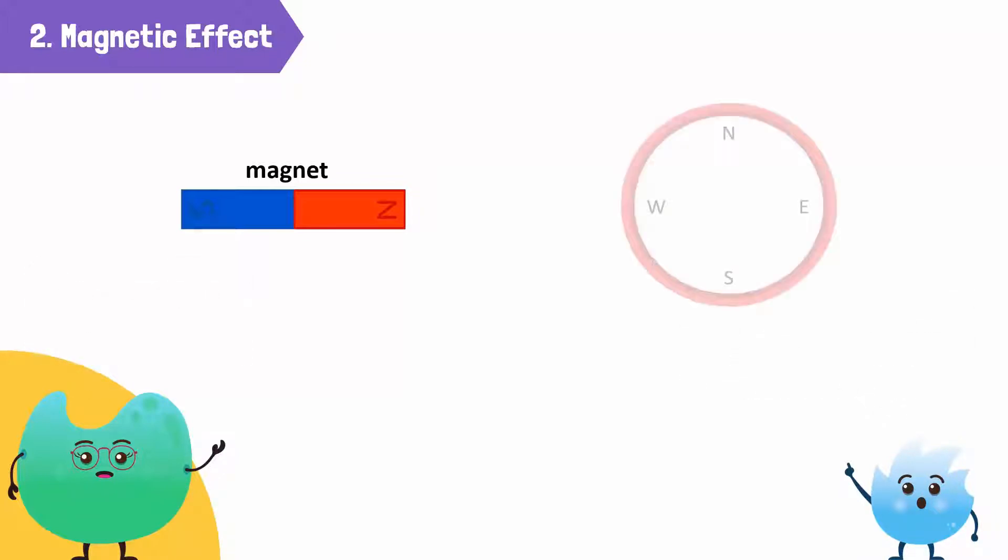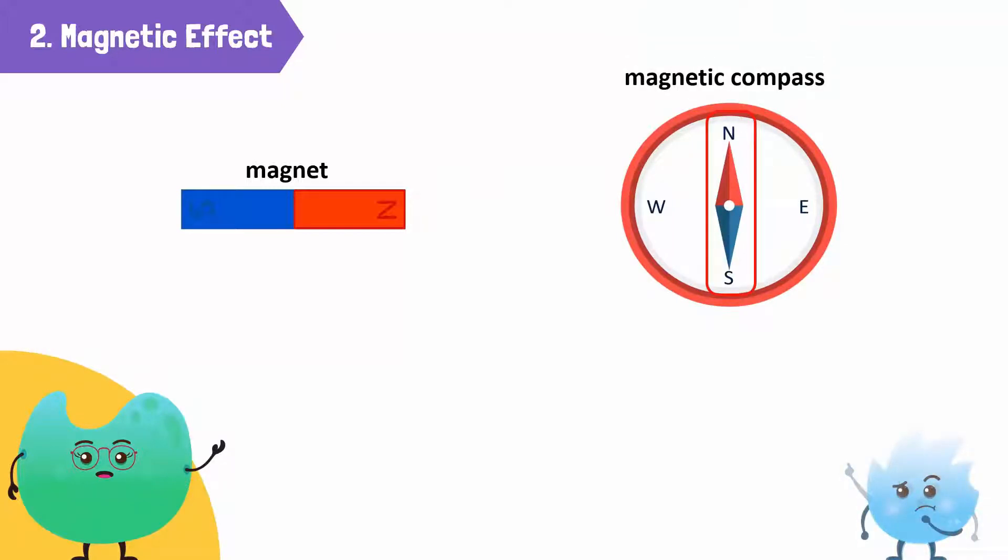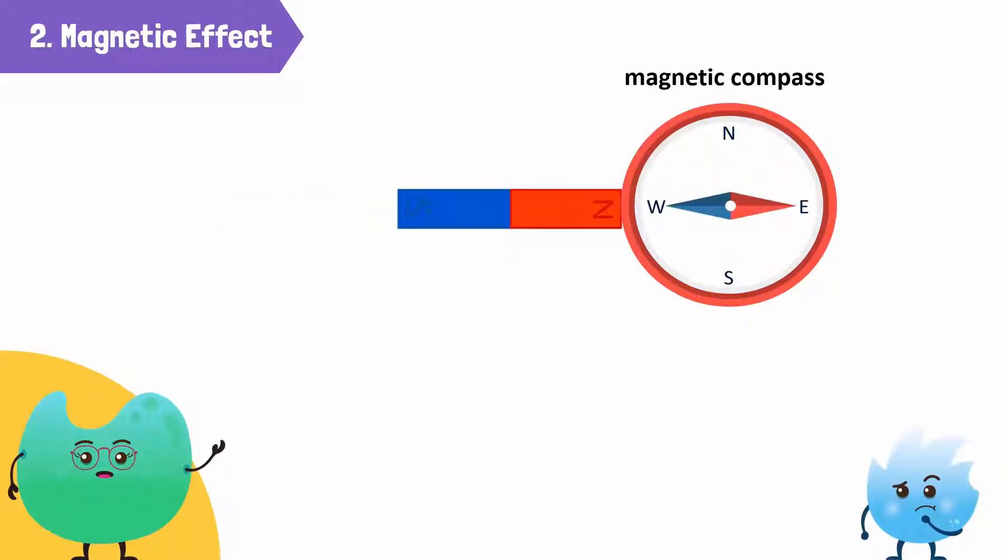Yes, and this is a magnetic compass. There is a pointer inside of its glass chamber that points us in the right direction. Now, observe what happens when we bring a magnet near the compass. Its needle deflected.